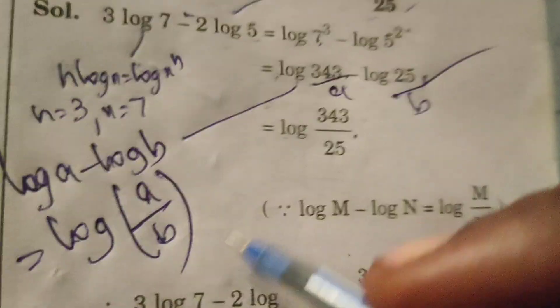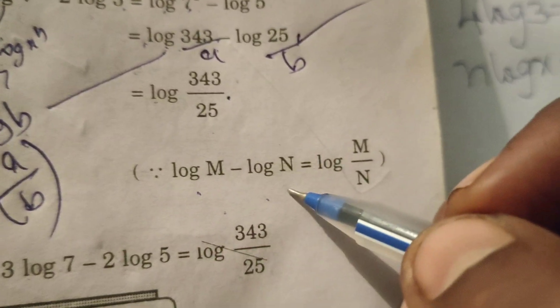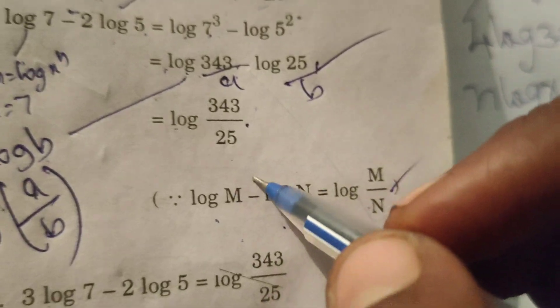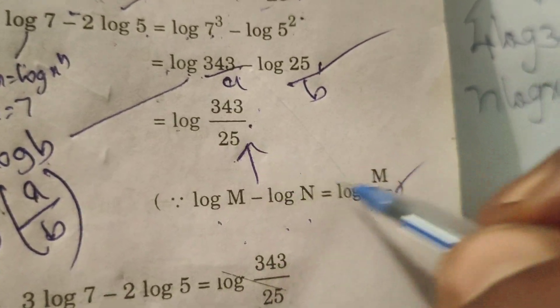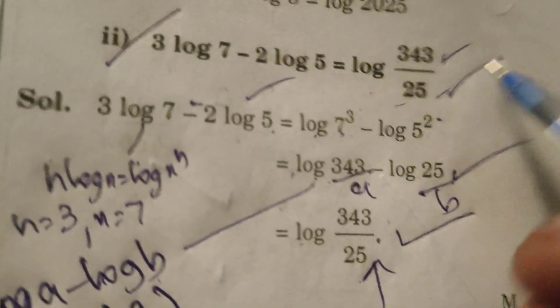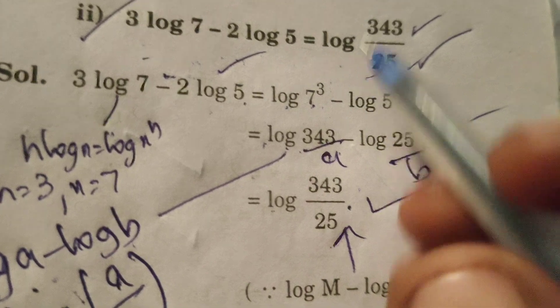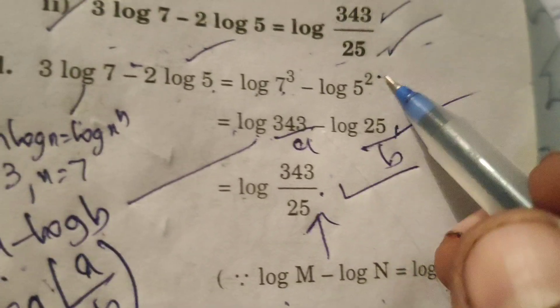Now here applying the rule log a minus log b or log m minus log n. Both are here log m by n. According to this formula here write. Hence proved the given result: 3 log 7 minus 2 log 5 equals log of 343 by 25.